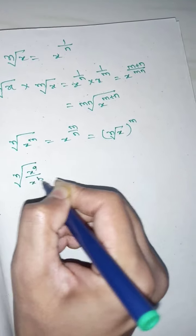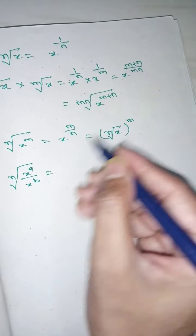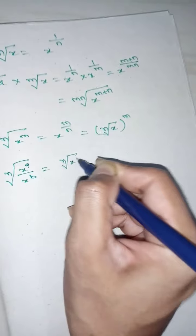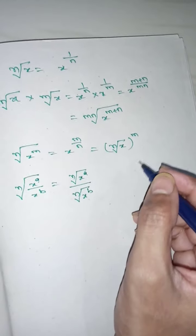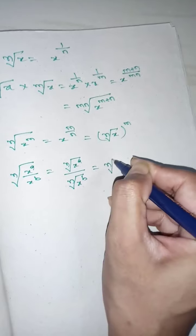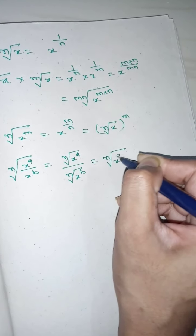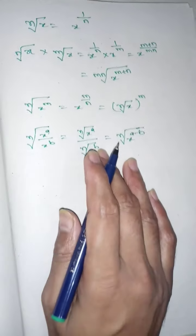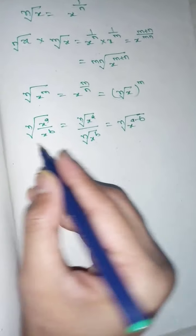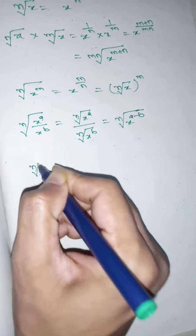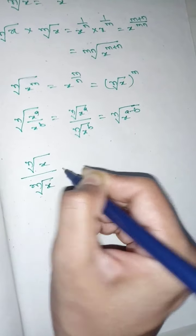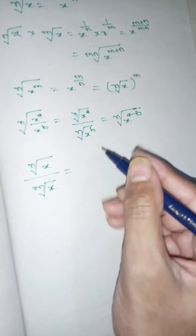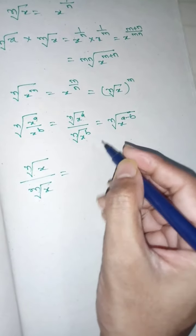The nth root of x to the power of a by x to the power of b is equals to nth root of x to the power of a divided by nth root of x to the power of b, which simplifies to the nth root of x to the power of a minus b.